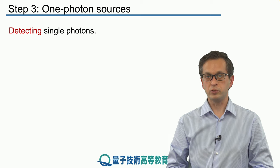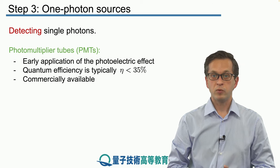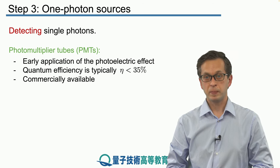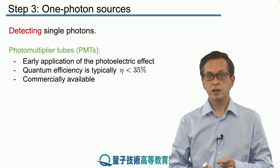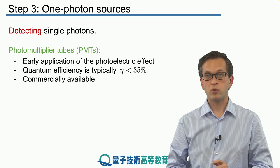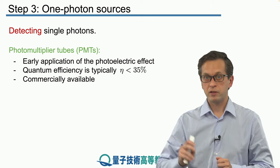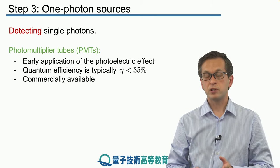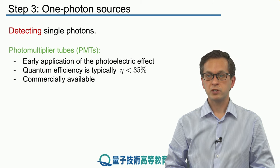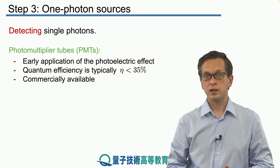How do we detect single photons? We have seen one way in a previous lesson: photomultiplier tubes, or PMTs, which are an early application of the photoelectric effect. The photon comes in, hits a metal plate, and ejects one photoelectron. This photoelectron undergoes a cascade transformation through many different dynodes at different voltages, producing a measurable current. Photomultiplier tubes have efficiencies of approximately 35% or less, depending on the frequency of the single photons.